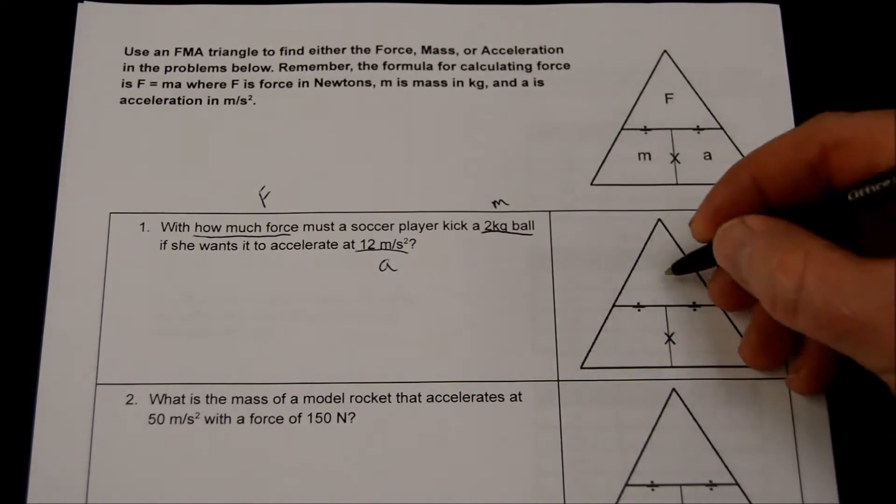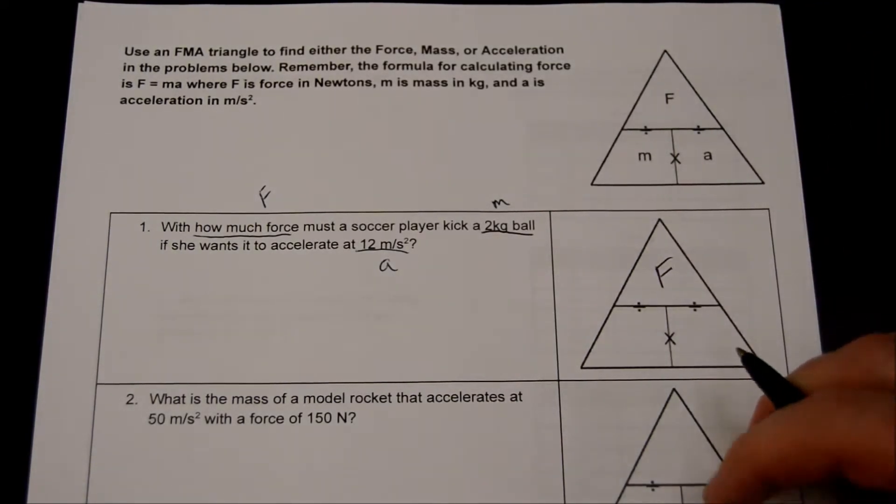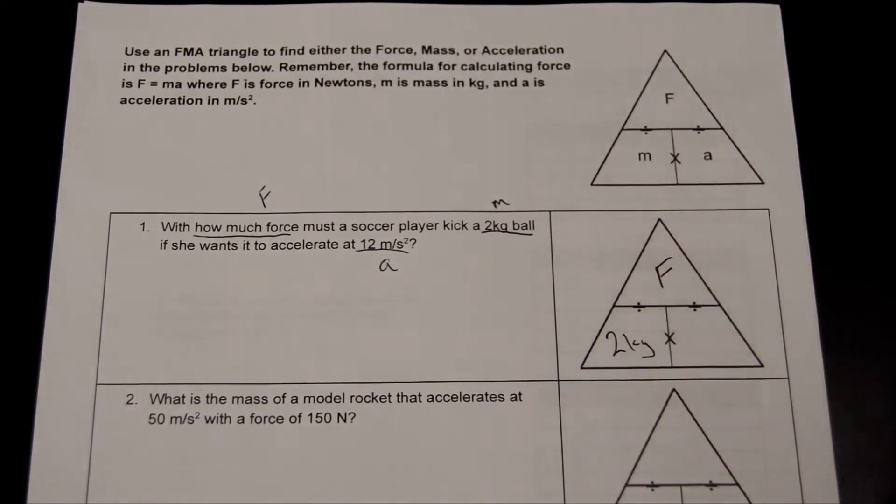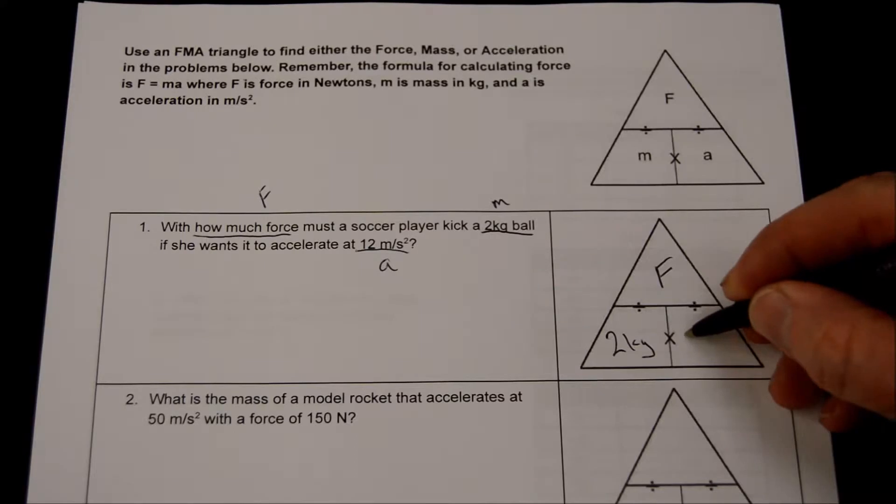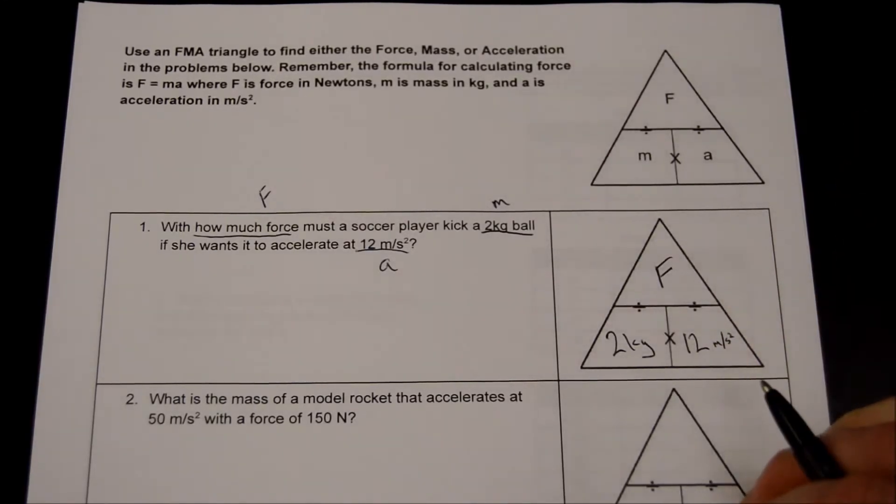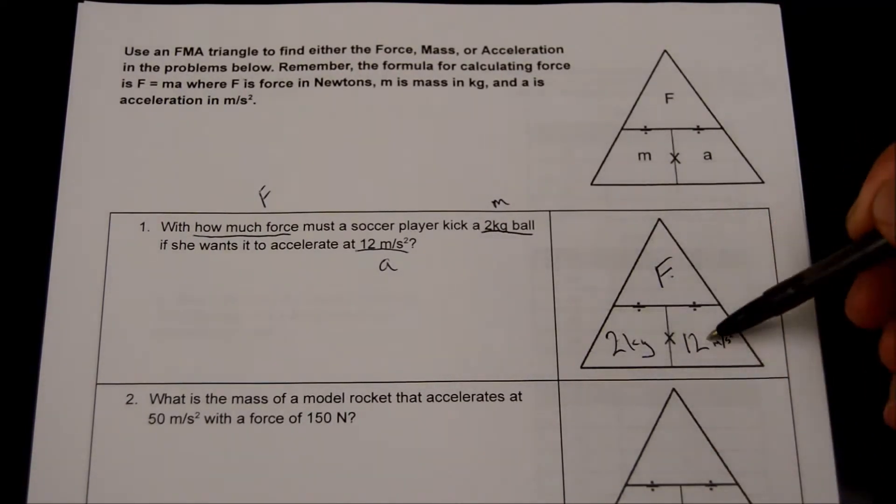Let's put these in our triangle. We don't know force, so we'll put an F there. We know our mass is two kilograms, and we know our acceleration is 12 meters per second squared. What does our triangle tell us to do? It tells us that force is going to be equal to 2 times 12.